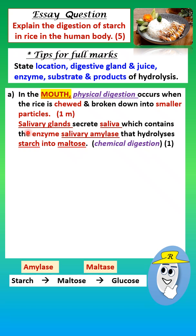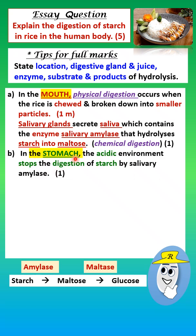Next comes chemical digestion. The salivary gland secretes saliva, which contains the enzyme salivary amylase that hydrolyzes starch into maltose. We mention the digestive gland — the salivary gland — then the juice, saliva; the enzyme, salivary amylase; the substrate, starch; and the product, maltose. That's one mark.